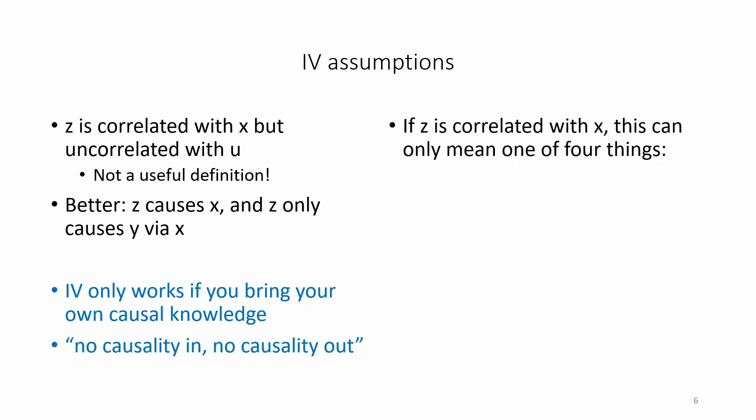If z is correlated with x, this can only mean one of four things. z causes x, z is caused by x, z and x are caused by a background variable omega, or z and x are related only due to selection bias. When applying instrumental variables analysis, you have to be certain that you are in the first case that z causes x.